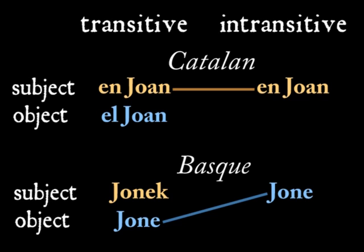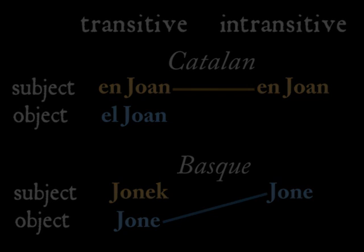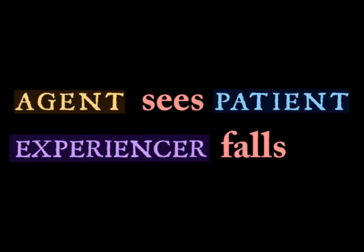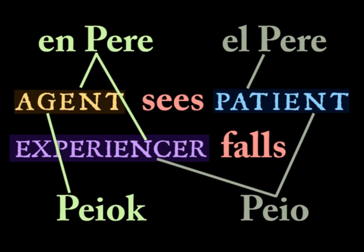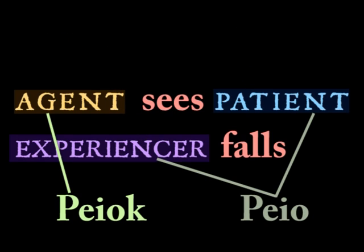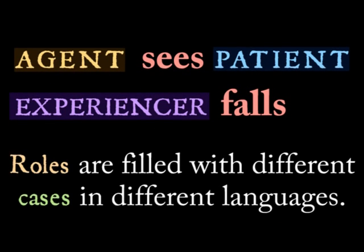This supports the idea put forth earlier, which is that cases and roles are treated as distinct. If we look at the roles of those sentences: with the verb 'see' we have an agent and a patient; with the verb 'fell' we have an experiencer. In Catalan, the agent and the experiencer role are treated identically — they're filled with a noun in the same case, while the patient role is filled with a different case. In Basque, the agent role is filled with a different case than the patient and the experiencer roles. We end with noun roles filled with nouns from different cases in different languages.